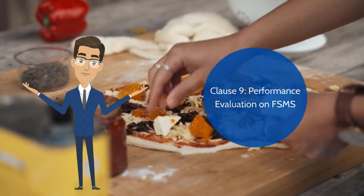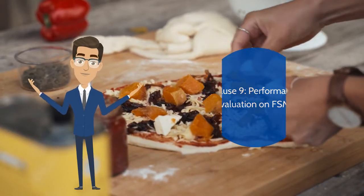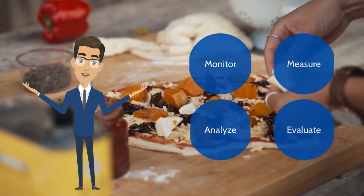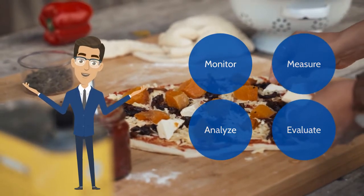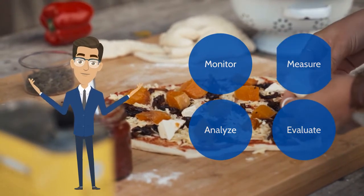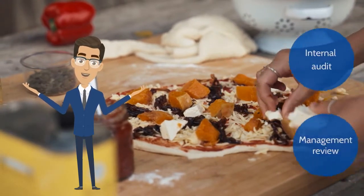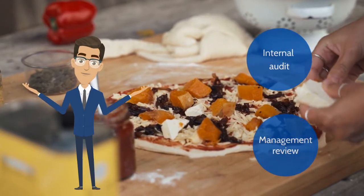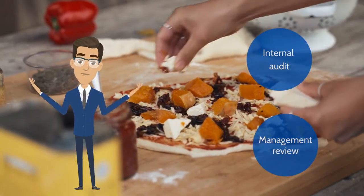Clause 9 is performance evaluation on the food safety management system. The organization needs to monitor, measure, analyze and evaluate their performance. They also need to conduct internal audits and management reviews at least once a year.